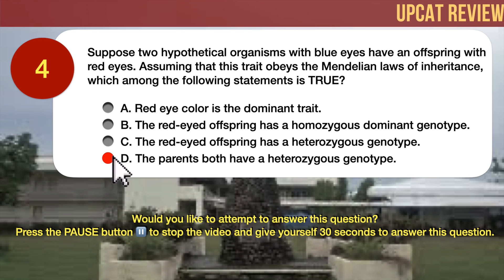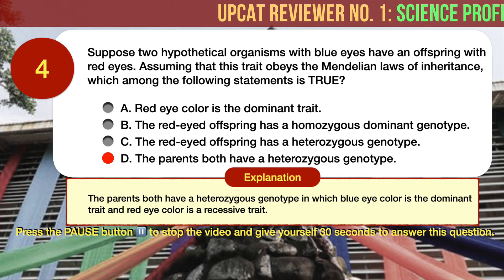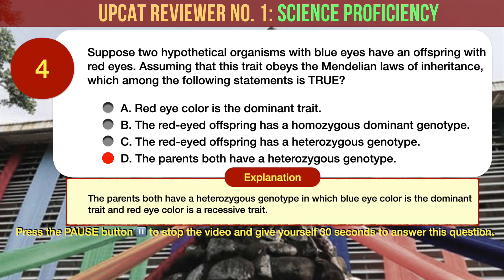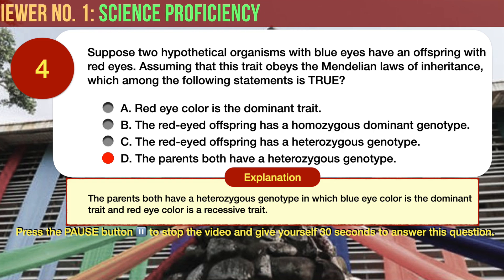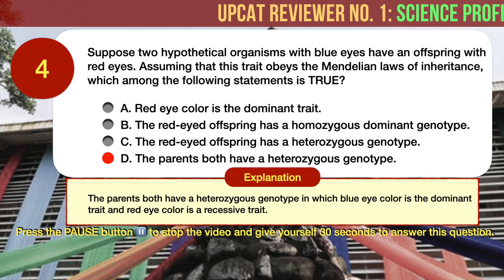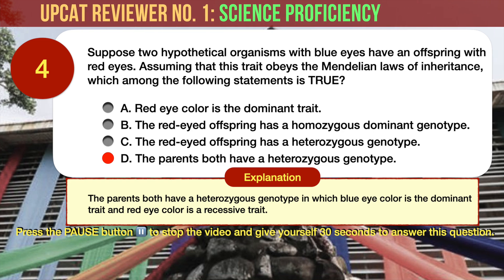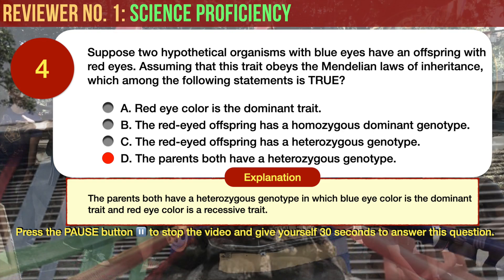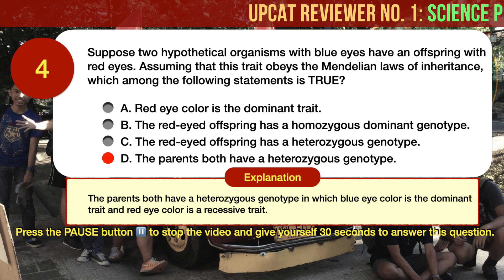The correct answer is D: the parents both have a heterozygous genotype. Since both parents have blue eyes, blue eye color must be the dominant trait. Therefore, red eye color cannot be the dominant trait, so A is not true. The red-eyed offspring cannot have a homozygous dominant genotype since both parents express blue as dominant — red eye color must be a recessive trait. The red-eyed offspring must have a homozygous recessive genotype, so B is not true. C is likewise not true. The parents both have a heterozygous genotype in which blue eye color is dominant and red eye color is recessive.